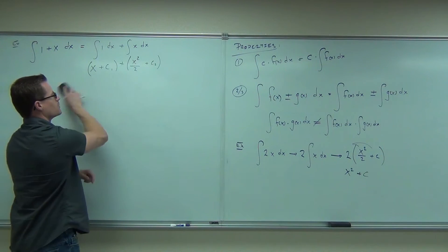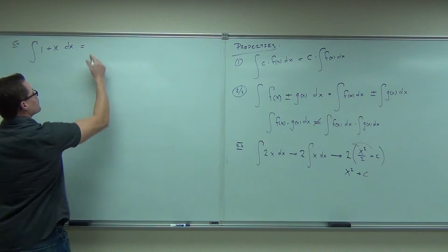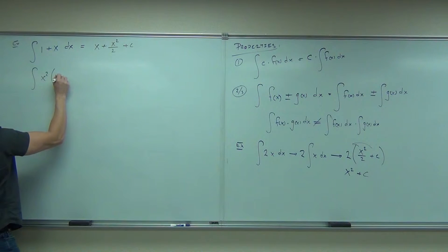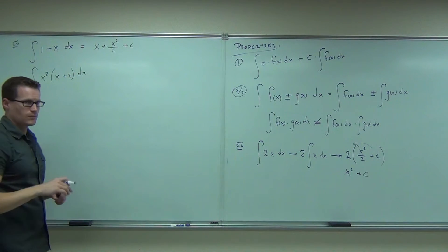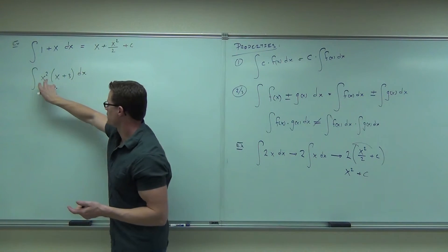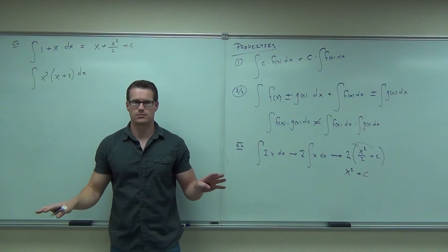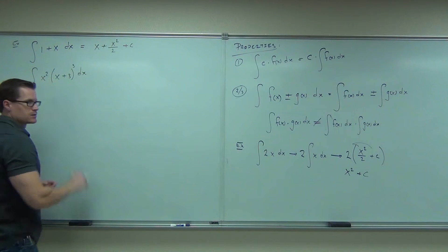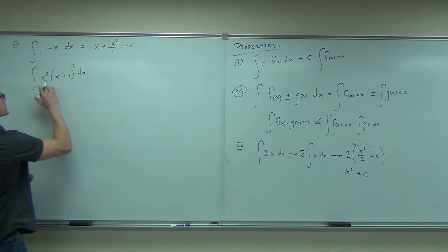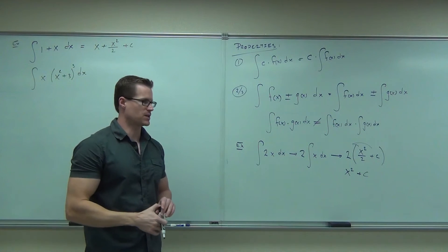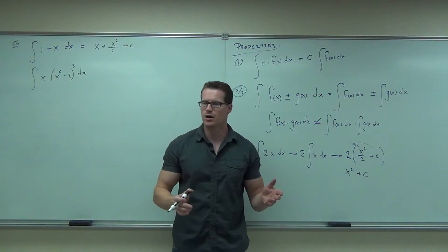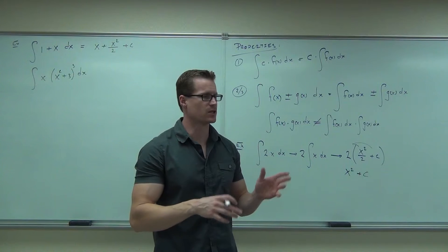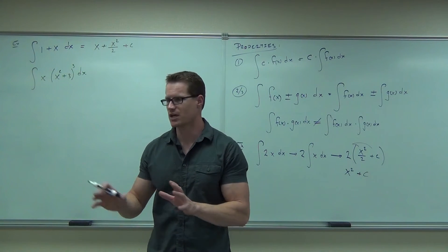Is there a special rule for functions multiplied together? Kind of. What you could not do is take the integral of this thing times the integral of that thing — that doesn't work. What could you do? Distribute. That would solve your problems. Some integrals are going to be off limits for this class, but a lot of them you'll be able to do — they must fit your integration table. Whether you need to distribute or do something else, make it fit your table somehow.